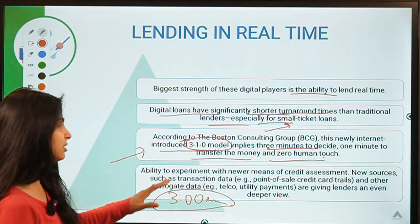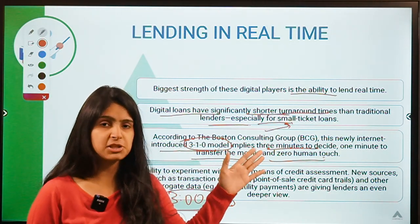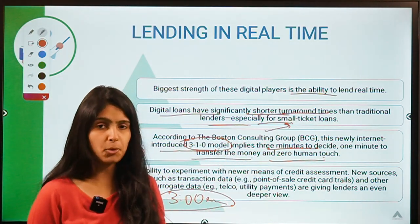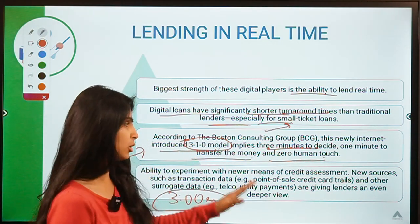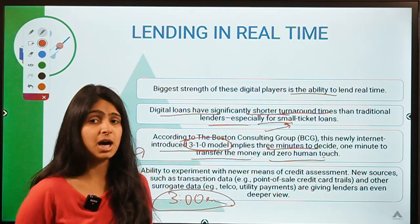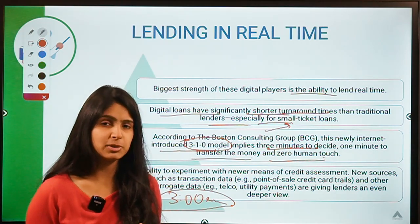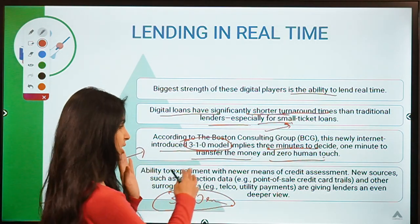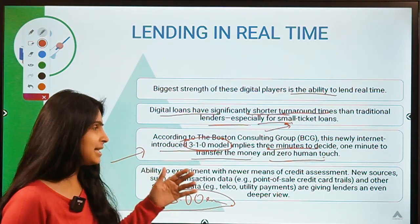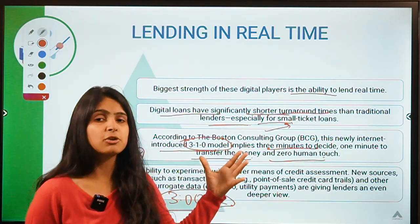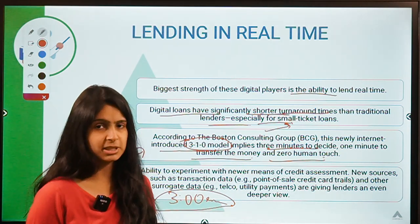There is a newly introduced 3-1-0 model: three minutes to decide whether to give a loan, one minute to transfer the money, and zero human touch. This model was published in a BCG (Boston Consulting Group) report on fintech trends, illustrating how fast digital lenders can provide loans — in just five minutes.